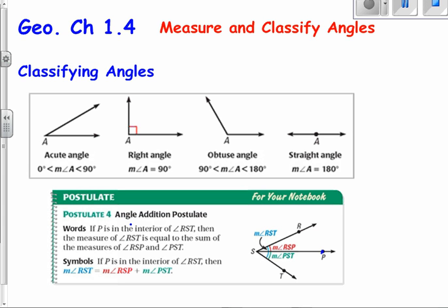All right, this is Mr. Knight, Geometry, Chapter 1.4, Measuring Classified Angles. So let's get started. If you remember, an angle that is between 0 degrees and 90 degrees, we call that acute.